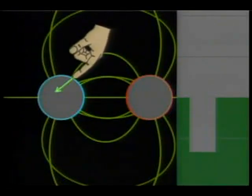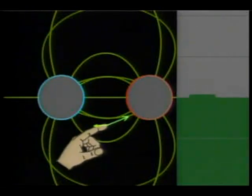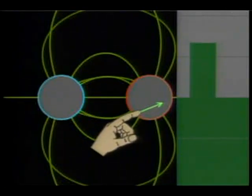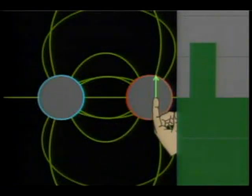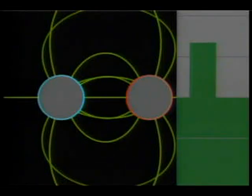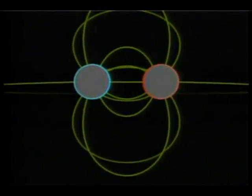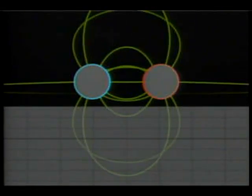But since there's no field inside, the potential is the same everywhere in the metal. The potential depends on how much net charge each one has.